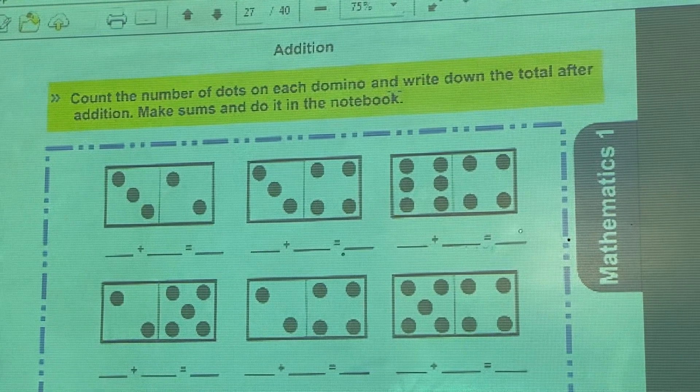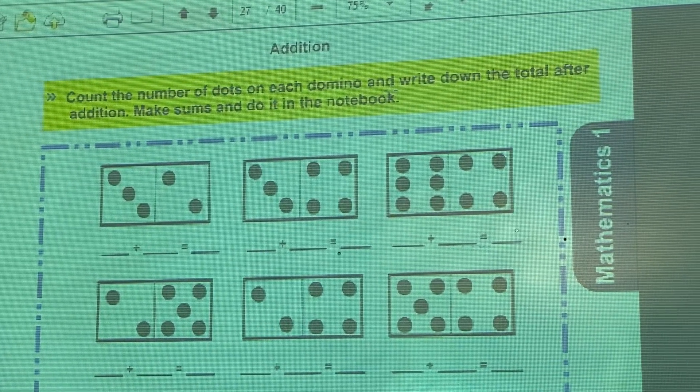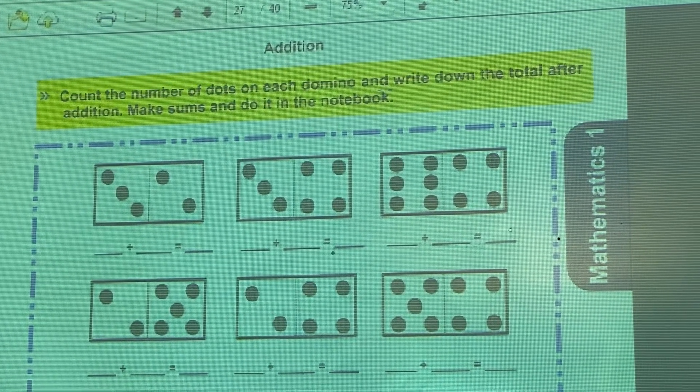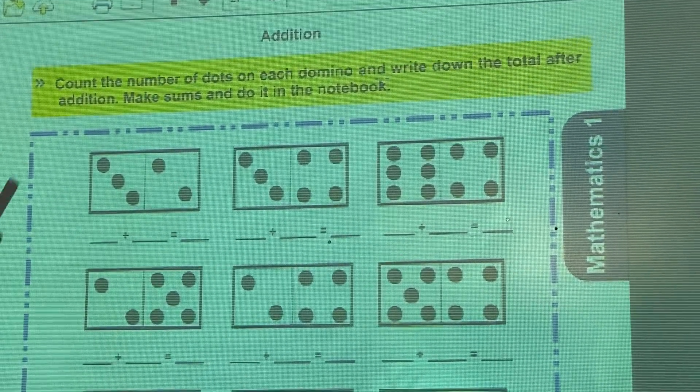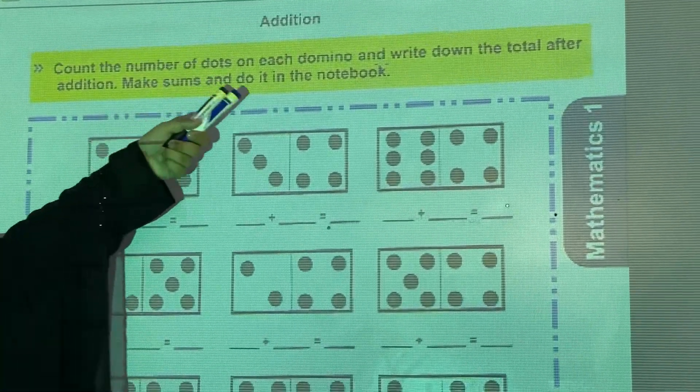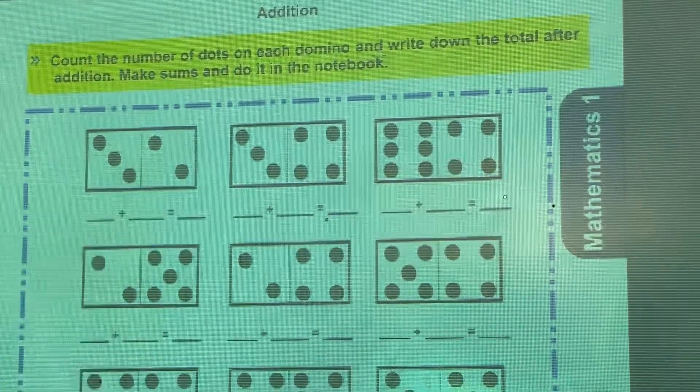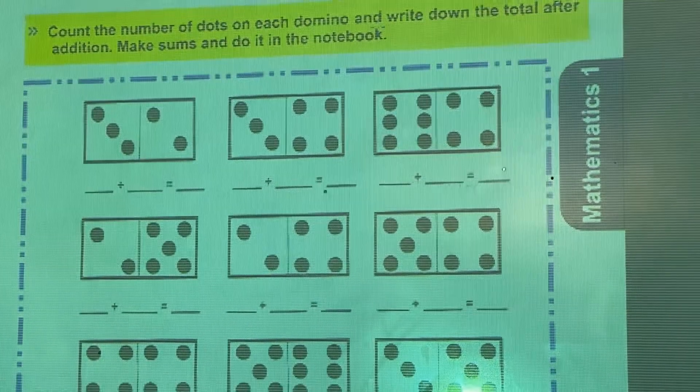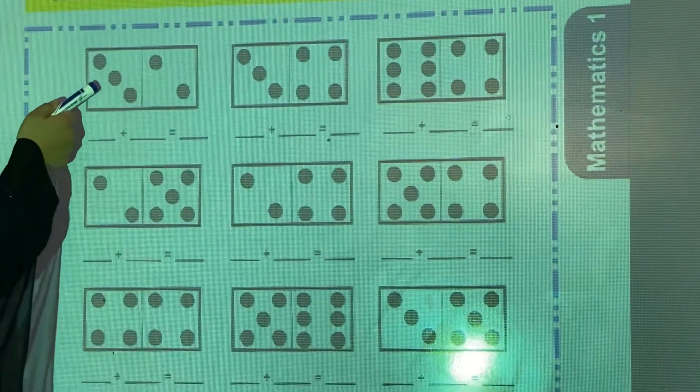Count the number of dots on each domino and write down the total after addition. Make sums and do it in the notebook. You have to count these dots.